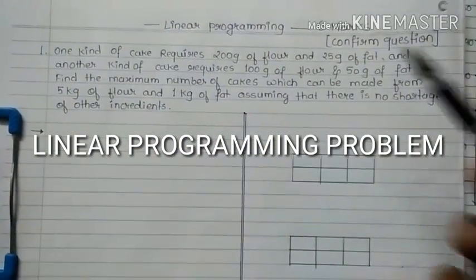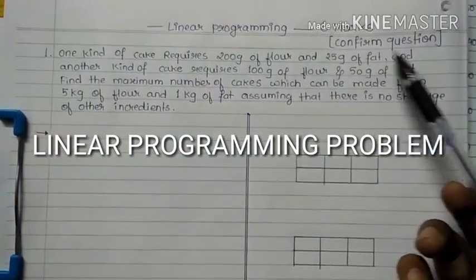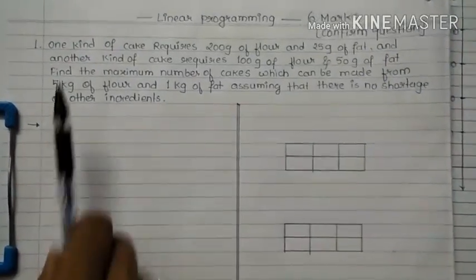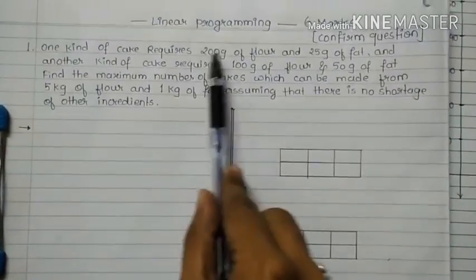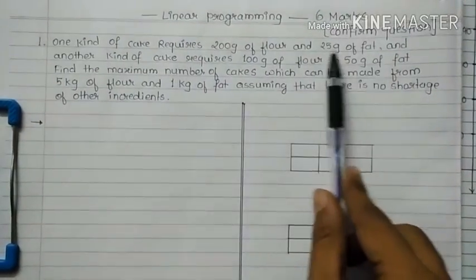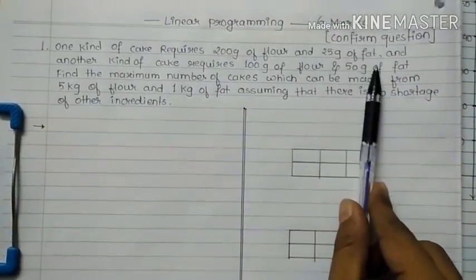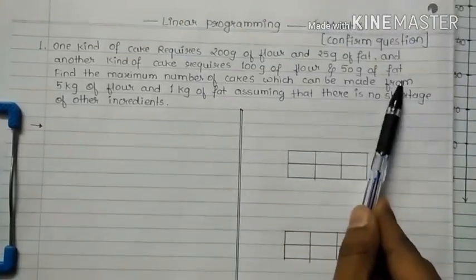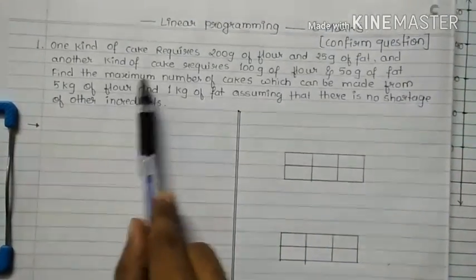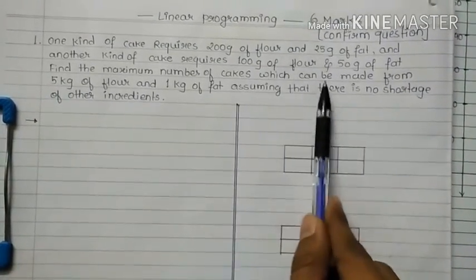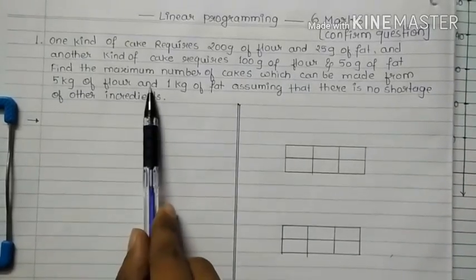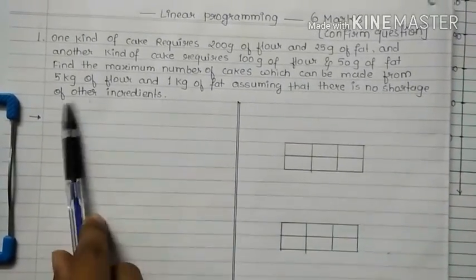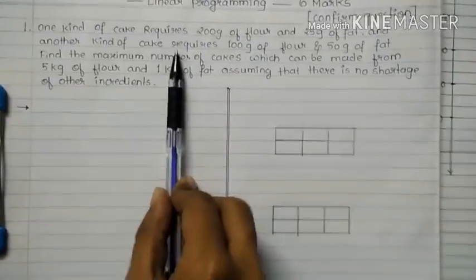This is a linear programming question — confirmed for 6 marks in the board exam. One kind of cake requires 200g of flour and 25g of fat. Another kind of cake requires 100g of flour and 50g of fat. Find the maximum number of cakes which can be made from 5kg of flour and 1kg of fat, assuming there is no shortage of other ingredients.